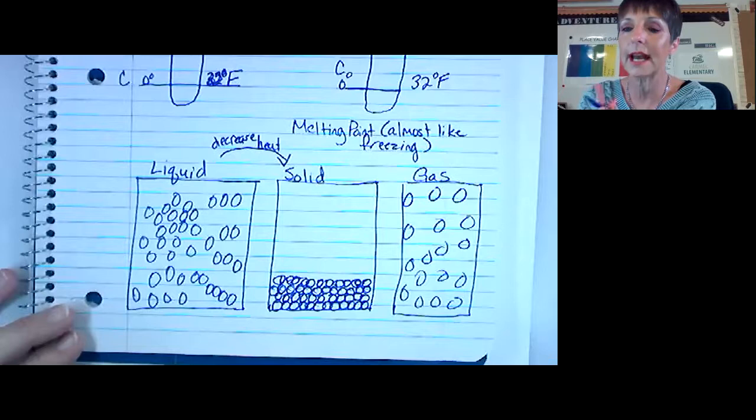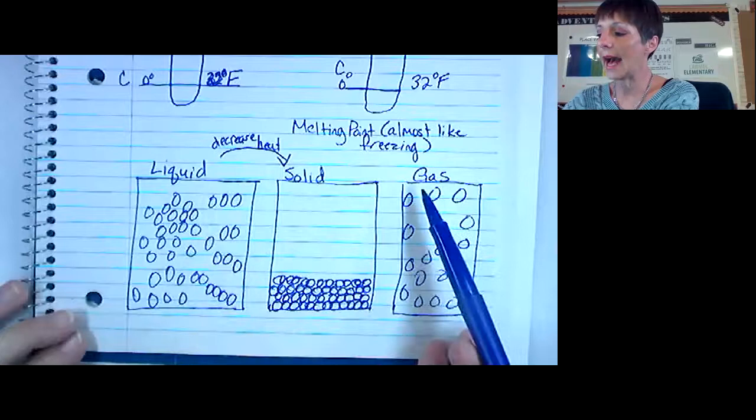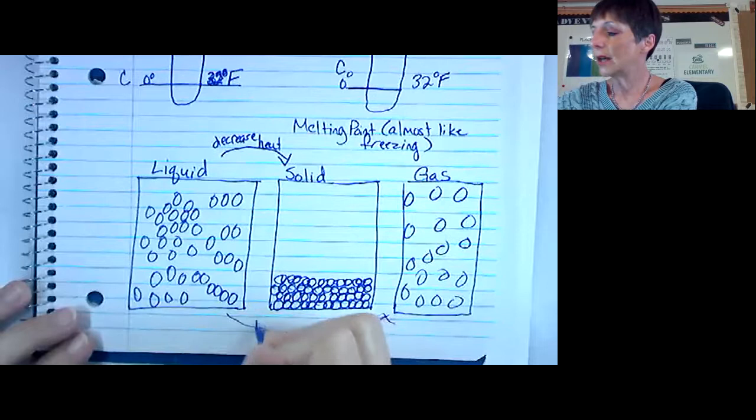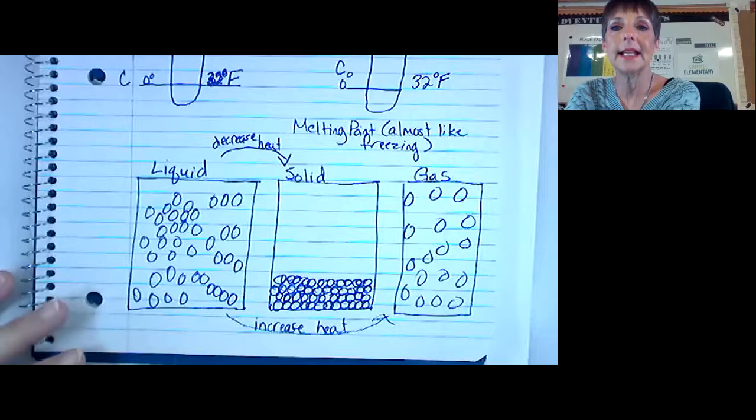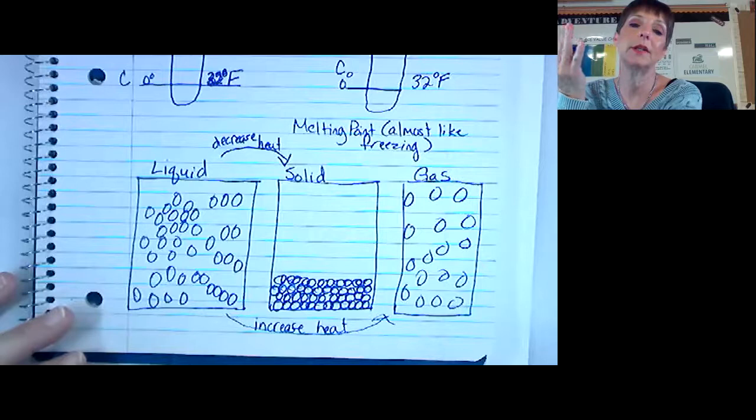If I wanted to go from a liquid to a gas, then I would increase heat. So that's like putting your water on the stove, it's normal room temperature, and then you turn the stove on, and as it heats up that water becomes a gas, it turns into steam.